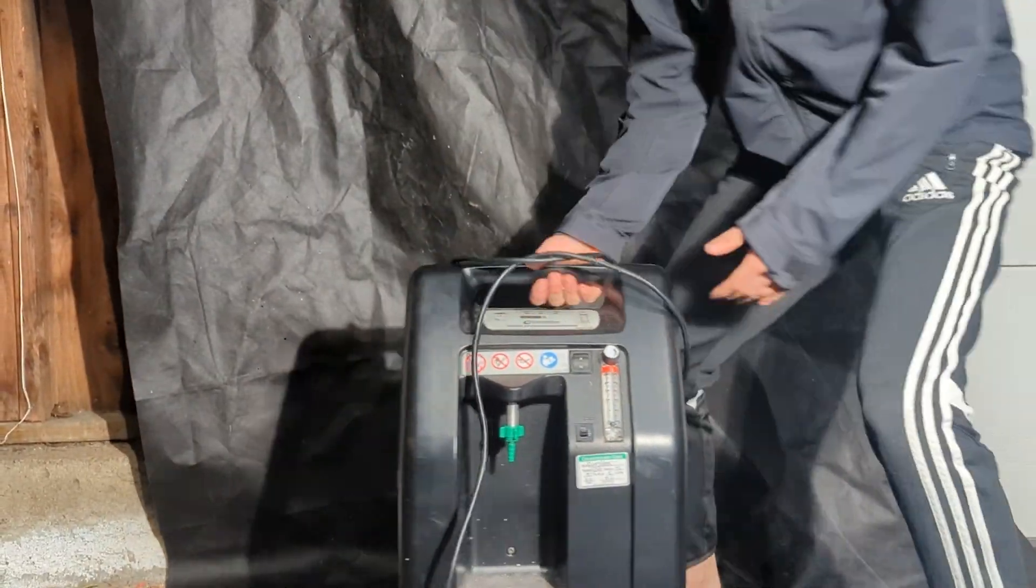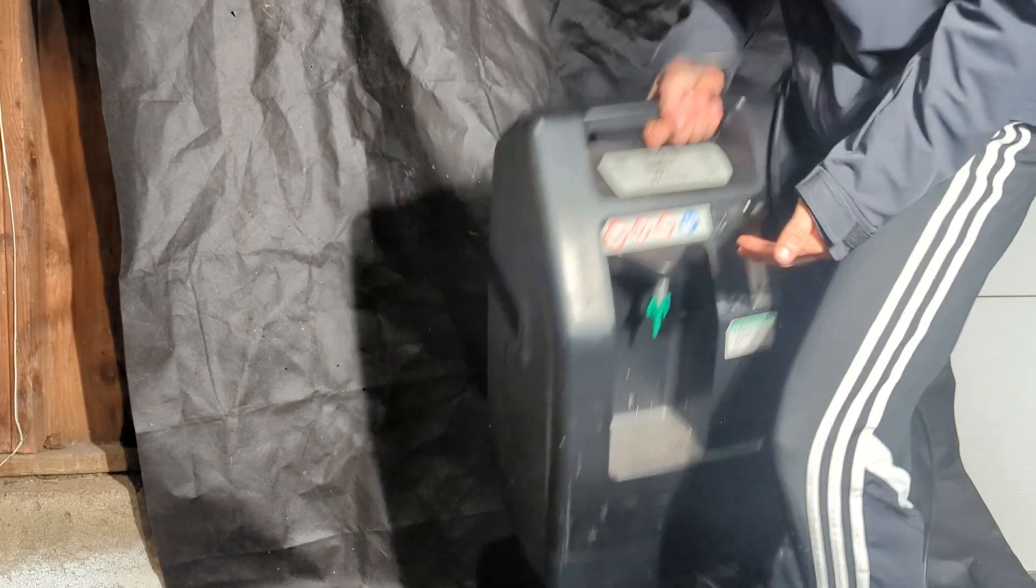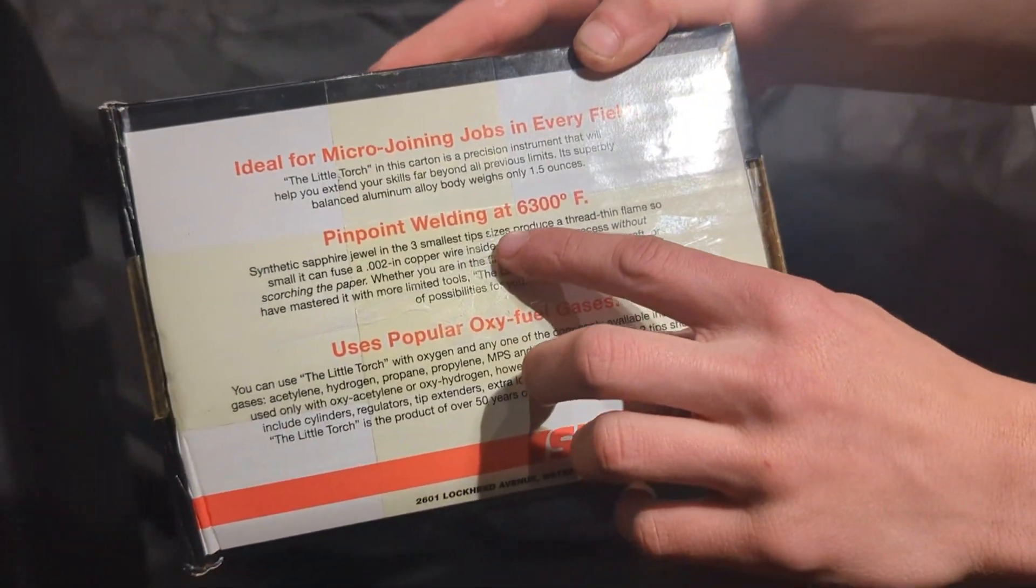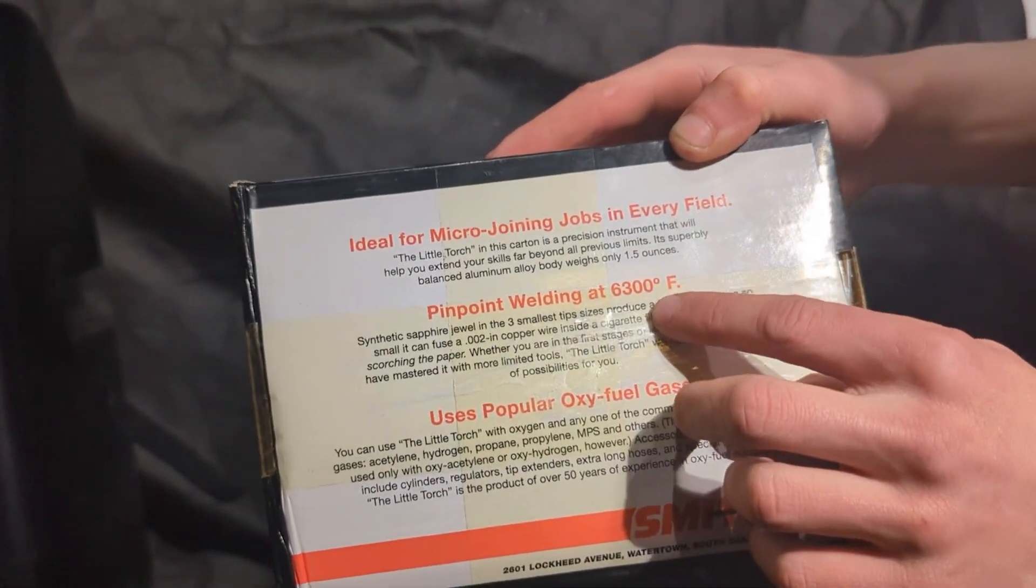In this video, we're going to be making an oxygen concentrator power torch. I got this jewelry torch that takes oxygen and propane gas and converts it into a flame that's 6300 degrees.